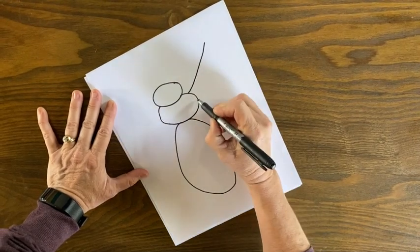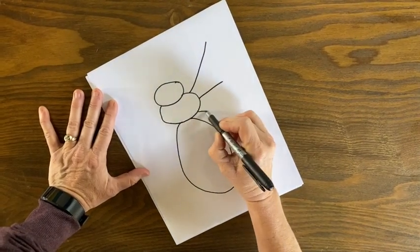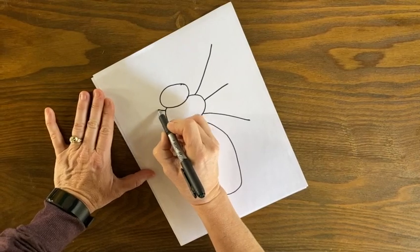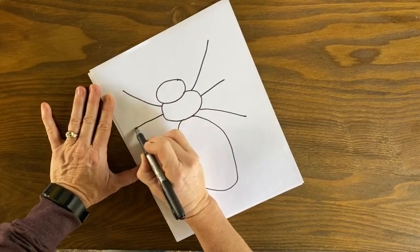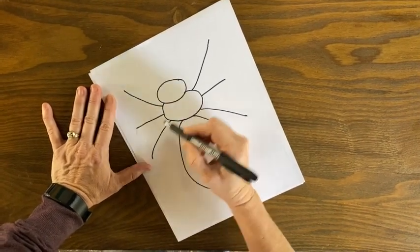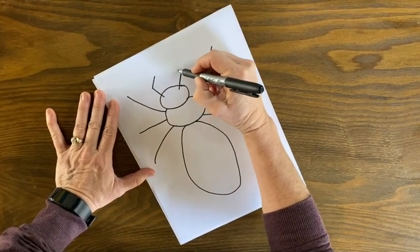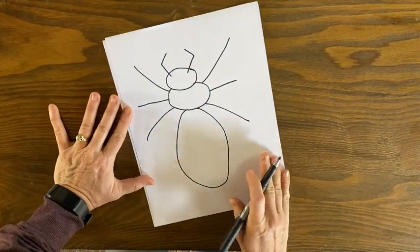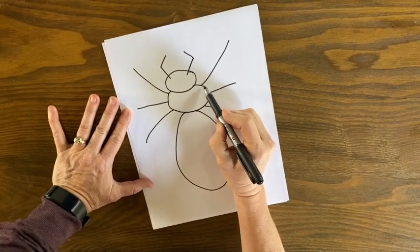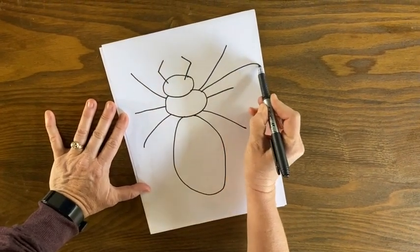Draw six legs—they all attach to the middle section called the thorax. Add two antennae, and now you'll add your wings. Most insects have two to four wings total.